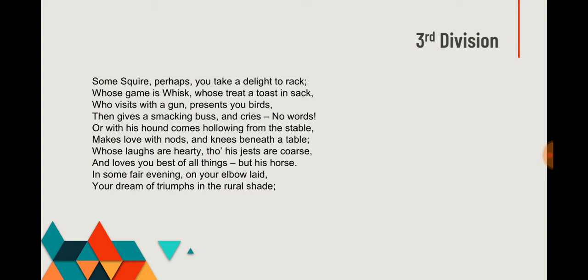In an attempt to provide some delight and pleasure in the poem and also in the life of the girl herself, the poet inserts a third paragraph in which he presents a love affair between the girl and the squire — the squire being the landlord or landowner in the countryside. Here the poem becomes rather funny because of the way the squire shows his love to the girl.